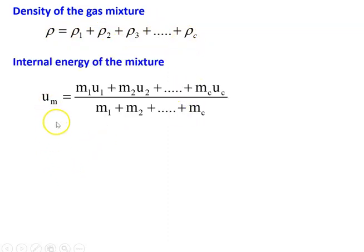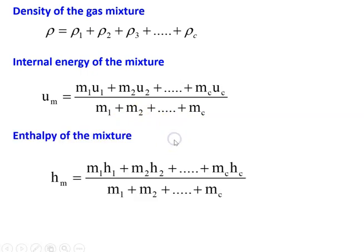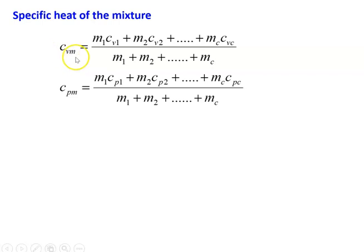The internal energy of the gaseous mixture is: Um = (M1·U1 + M2·U2 + ... + Mc·Uc) / (M1 + M2 + ... + Mc), where the denominator is the total mass of the mixture. The enthalpy of the gaseous mixture is: Hm = (M1·H1 + M2·H2 + ... + Mc·Hc) / (M1 + M2 + ... + Mc). Specific heat at constant volume: Cvm = (M1·Cv1 + M2·Cv2 + ... + Mc·Cvc) / M. Specific heat at constant pressure: Cpm = (M1·Cp1 + M2·Cp2 + ... + Mc·Cpc) / M.